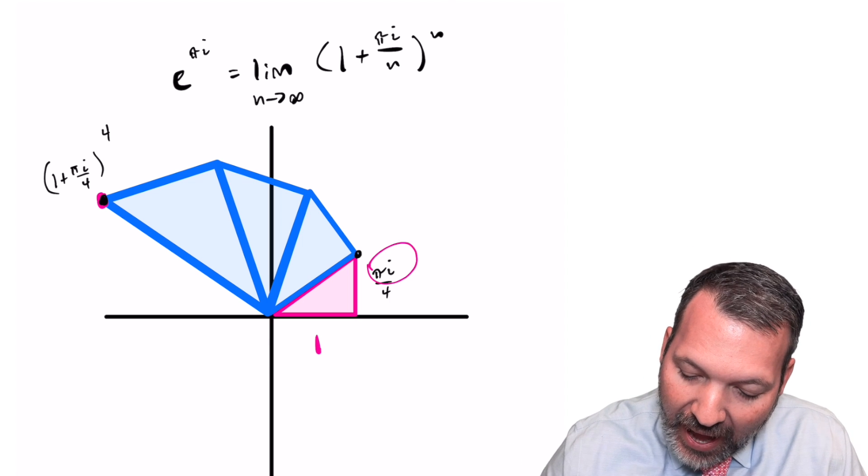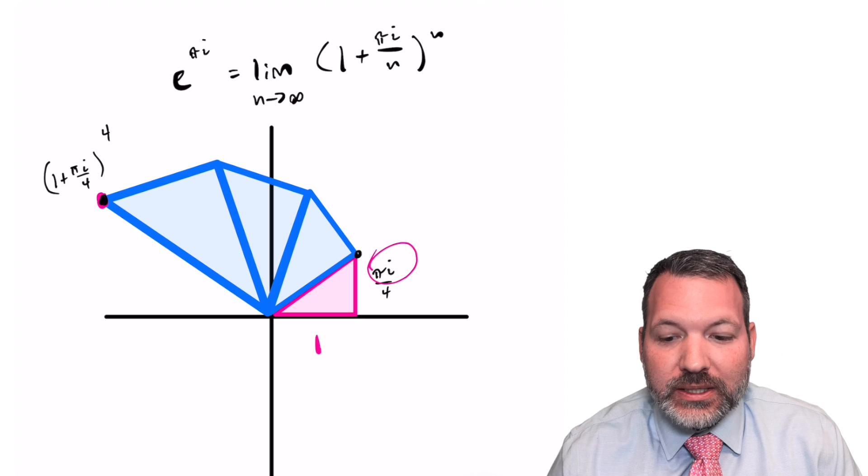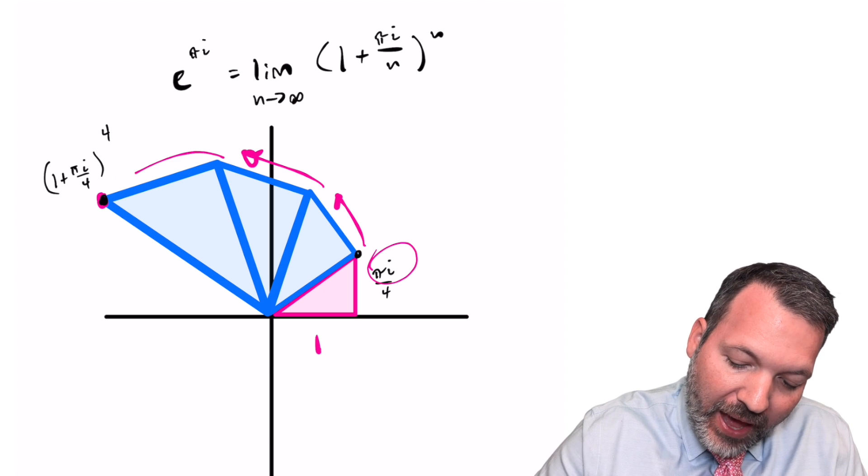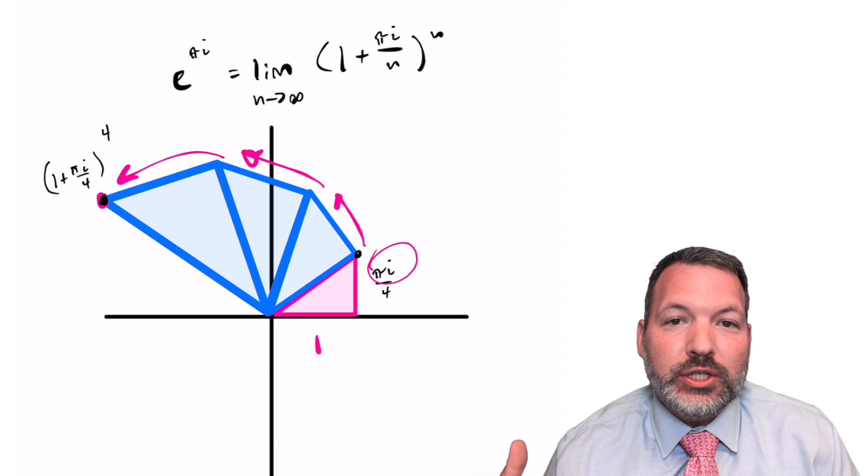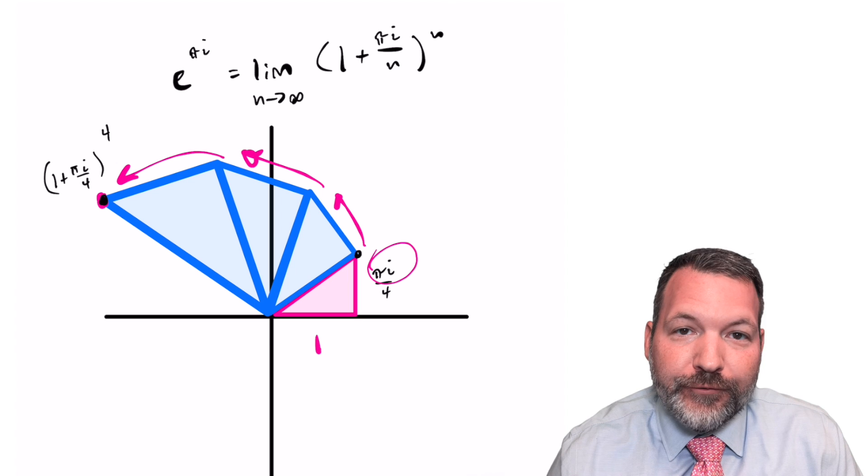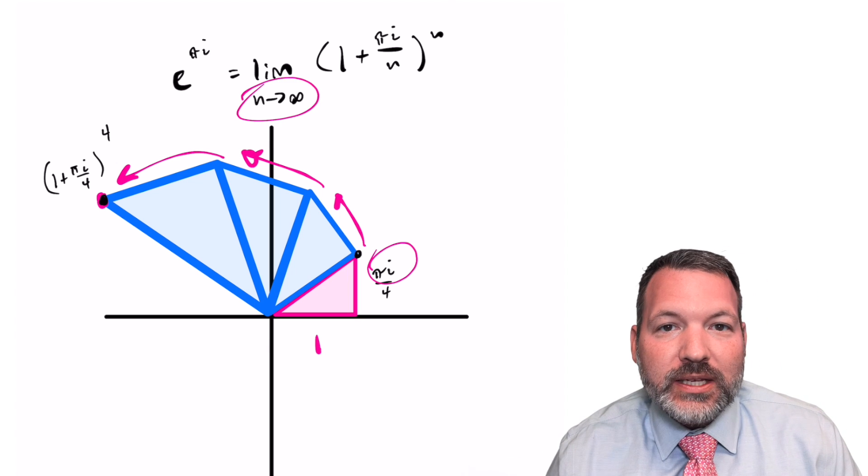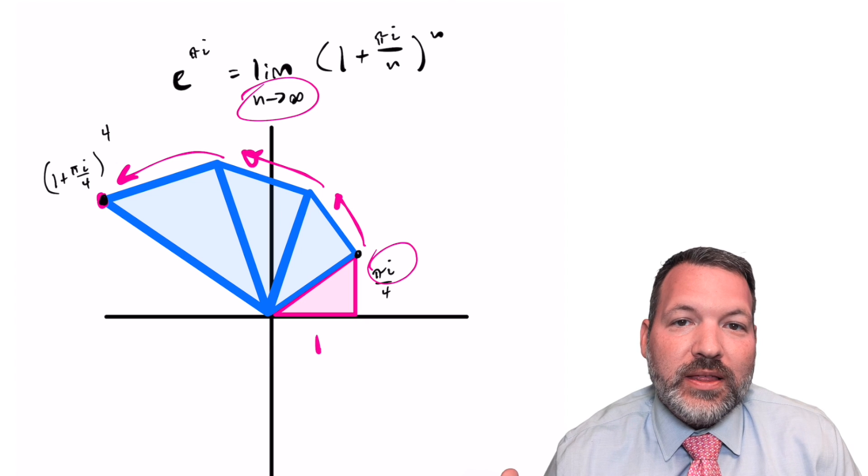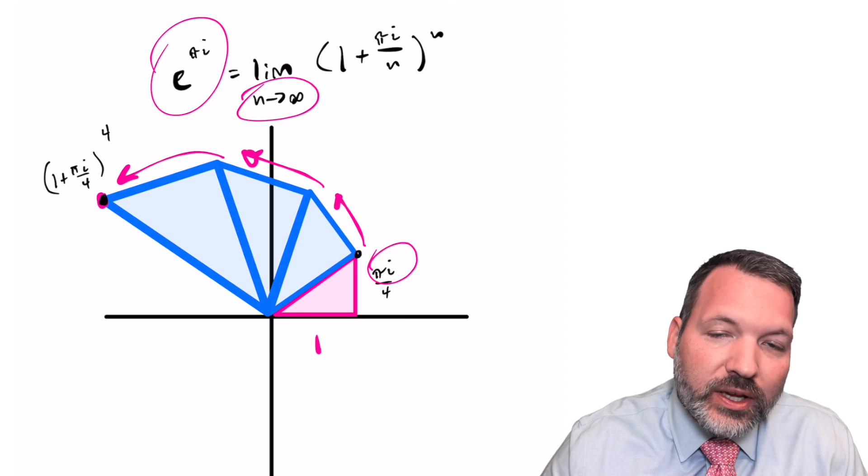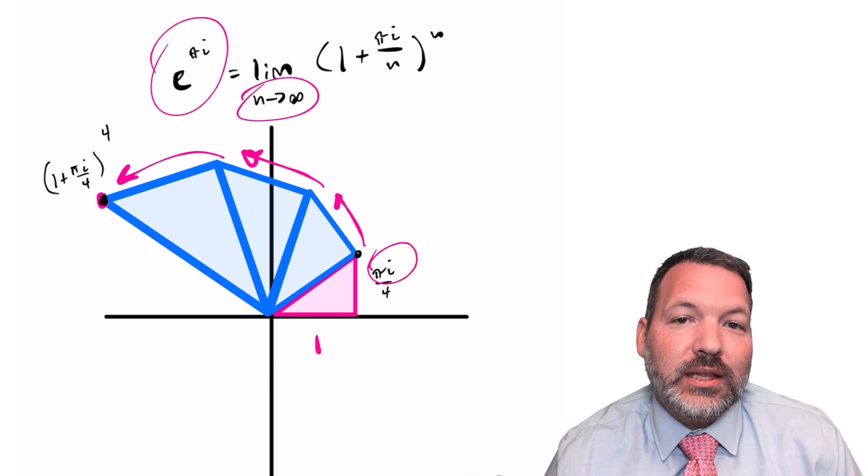So this gets us to where we need to be back in the complex plane where we're doing the triangle thing. As we split pi i into smaller and smaller bits, but then we multiply that number of times. If we split it into four parts, we multiply four times. We draw four of these similar triangles. Letting n increase toward infinity is going to get us that definition of e that we need, and so it's going to give us a value for the expression e to the pi i.